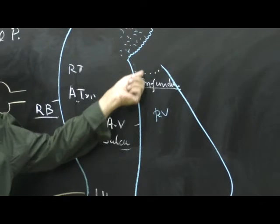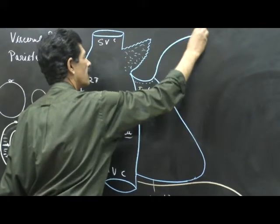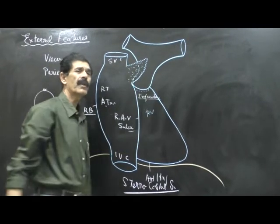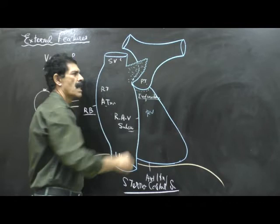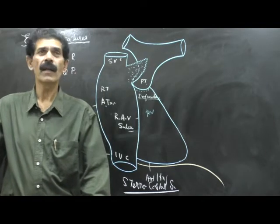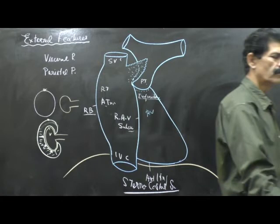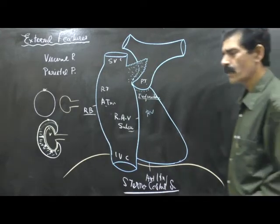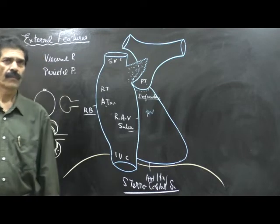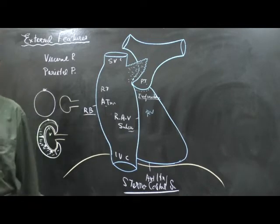Where the infundibulum ends, just above it begins the root of the pulmonary trunk. The pulmonary trunk divides into right and left pulmonary arteries — these are the only arteries in the entire human body that are blue colored, because they carry deoxygenated blood. The pulmonary trunk enters the hilum of the lung, occupying the upper part of the hilum. The lower part of the hilum is called the pulmonary ligament.